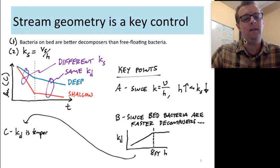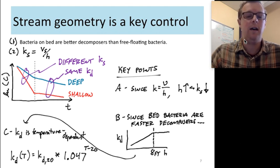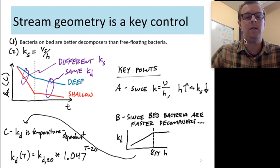And finally, I want to also note that decomposition is temperature dependent. And so the equation in the bottom left here may look familiar to you. That's the Arrhenius equation as applied to this decomposition rate. And there's a theta value in there of 1.047. And so you'll remember from early in the class, you can simply plug in the decomposition rate that you may measure in the lab. So KD at 20 degrees C and plug in your temperature to scale that KD depending on how warm or cool your actual system is.